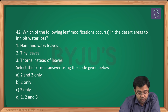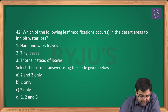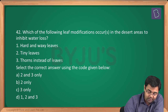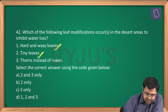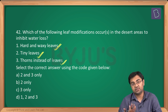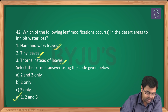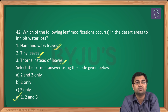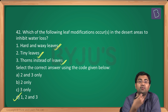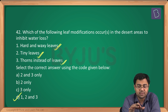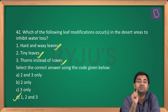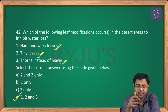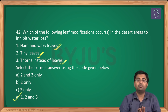Question number 42: which leaf modifications occur in desert areas to inhibit water loss? Hard and waxy leaves — correct. Tiny leaves — correct. Thorns instead of leaves — also correct. So the answer is 1, 2 and 3. Examples include cacti, acacia and palm trees, which all display these leaf modifications in desert climates.